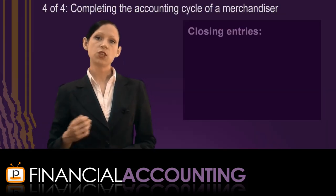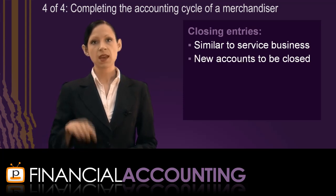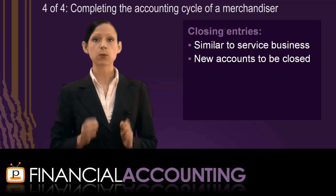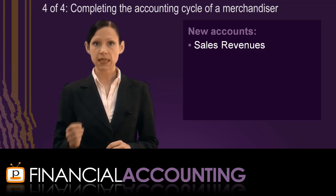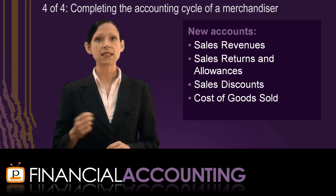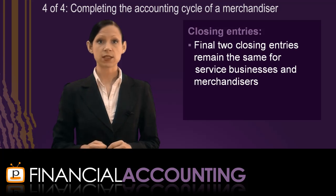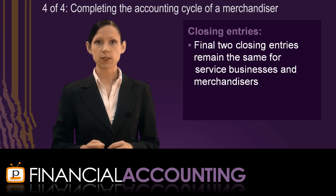At the end of the accounting period, merchandising businesses also record closing entries, similar to those of a service business, except that the merchandiser has new accounts to close. The first closing entry closes all temporary accounts with a credit balance to the income summary account, using the sales revenues account rather than the revenues account. The second closing entry closes all temporary accounts with a debit balance, including sales returns and allowances, sales discounts, cost of goods sold, and delivery expense. The final two closing entries — closing income summary to equity and closing withdrawals to equity — remain the same for both service businesses and merchandisers.